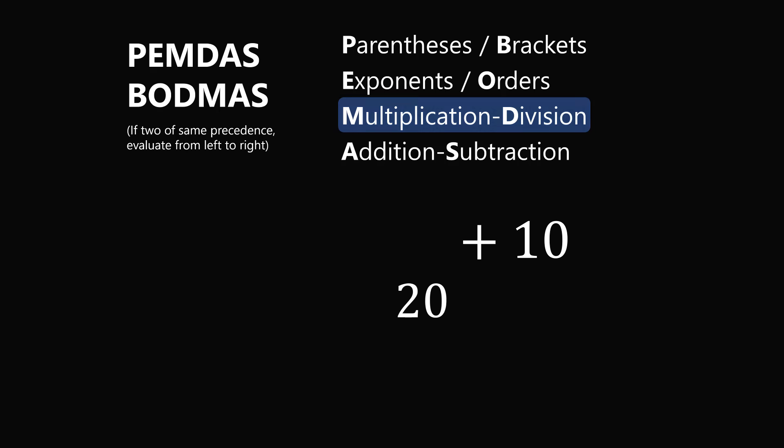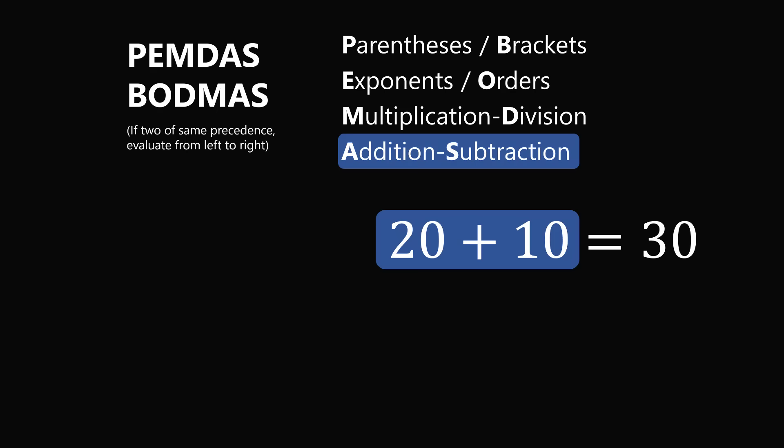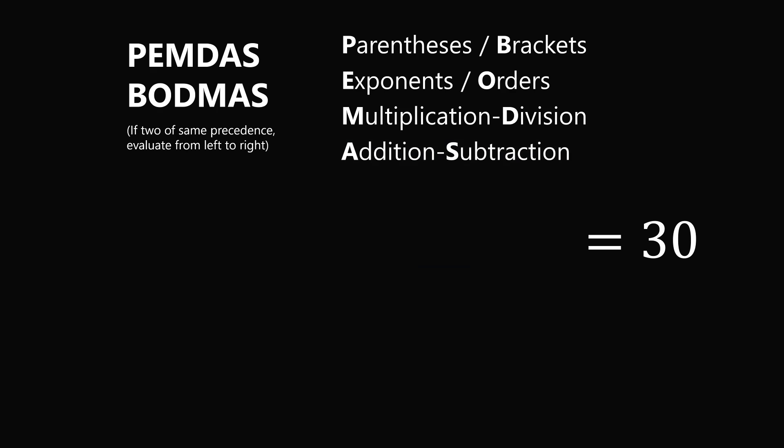And finally, we just have one operation remaining, which is an addition. So we have 20 plus 10. And I think this is not controversial, that this is equal to 30. So we have 50 divided by 5 times 2 plus 10 is equal to 30. And this is without a doubt the correct answer according to the modern interpretation of the order of operations.